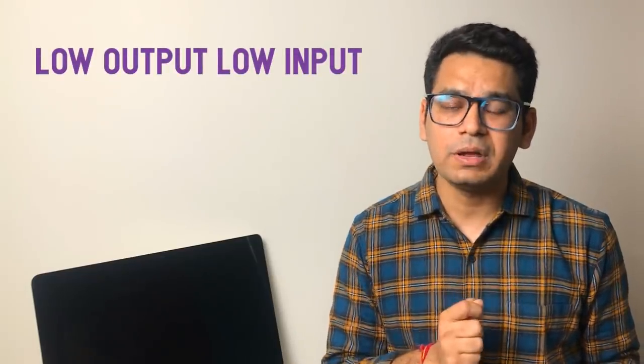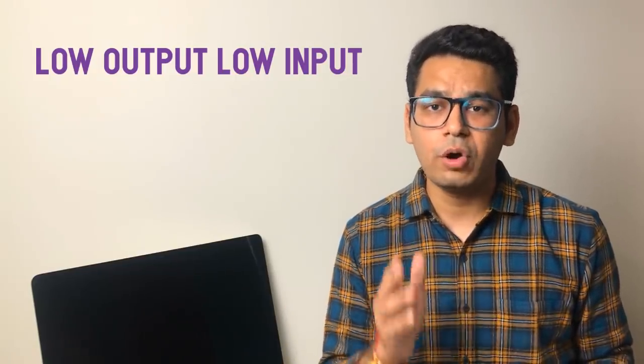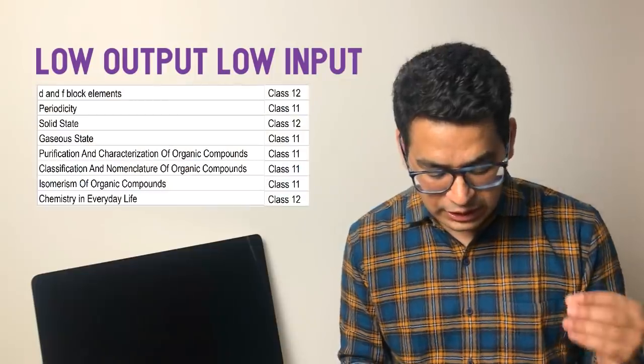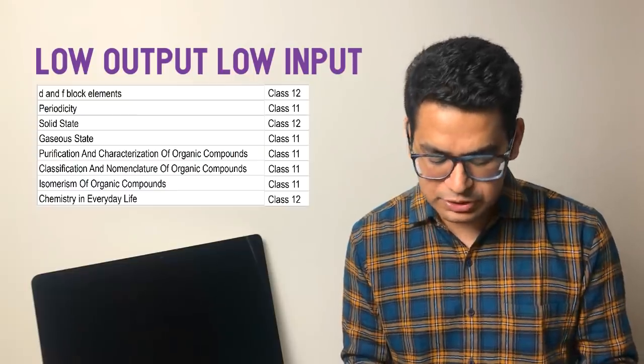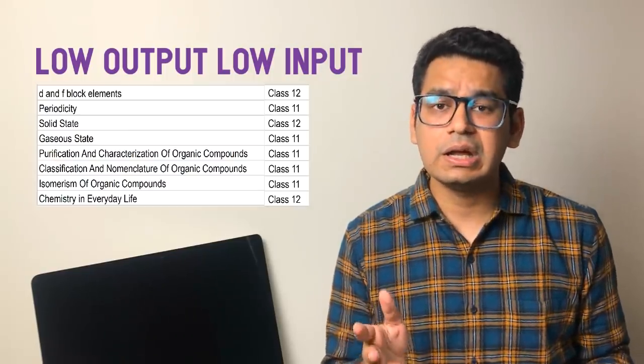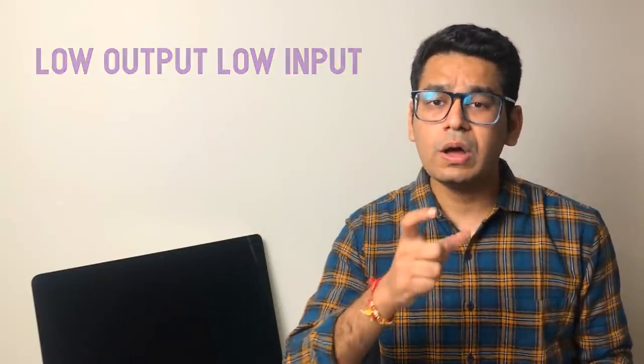Alright, the third category we have is low output, low input chapters. So low output low input means less input required, topics will be limited or the questions that come in the paper won't be that difficult. But proportionally, even if questions come in the paper, the probability is not very high. The probability of a single question coming from that single chapter is not very high. So those are D and F block elements, periodicity, solid state, gaseous state, purification, classification of organic compounds, isomerism and chemistry in everyday life.